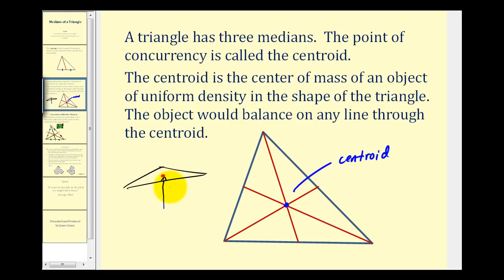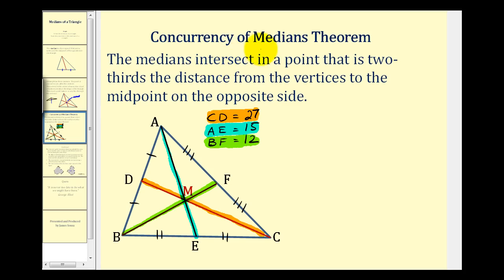Now let's take a look at the concurrency of medians theorem. The medians intersect in a point that is two-thirds the distance from the vertices to the midpoint of the opposite side. And we now know that point is the centroid.